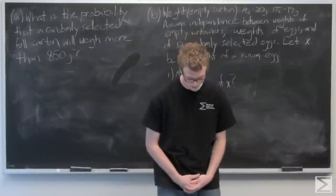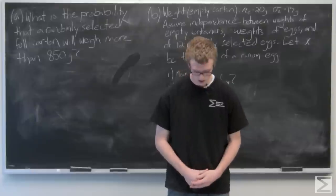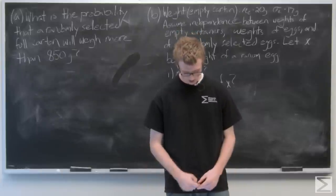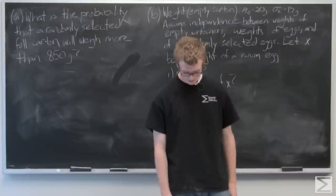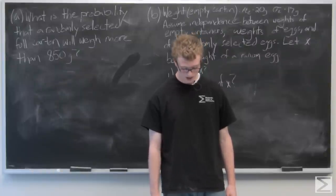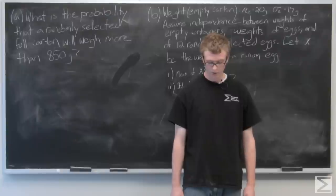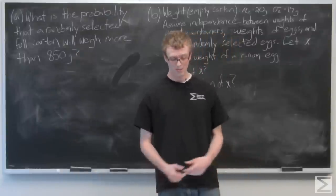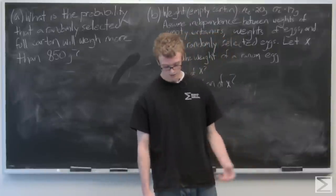Question number three: each full carton of grade A eggs consists of one randomly selected empty cardboard container and 12 randomly selected eggs. The weights of a full carton are approximately normally distributed with a mean of 840 grams and a standard deviation of 7.9 grams.